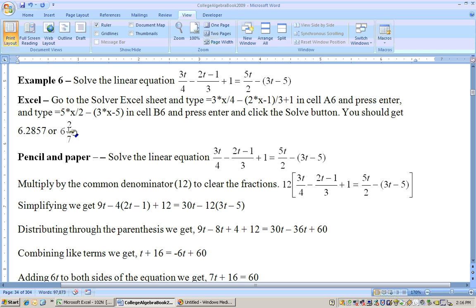Now, to solve this by hand, it is a bit of a pain. What we'd have to do is multiply by the common denominator, which is 12. And 4 goes into 12, 3 times, 3 times 3 is 9, so it would be 9t. 3 goes into 12, 4 times, 4 times the 2t minus 1. I'll distribute that through later.